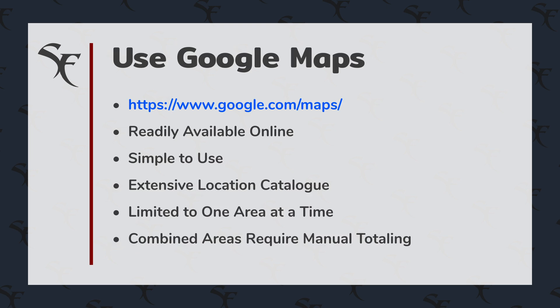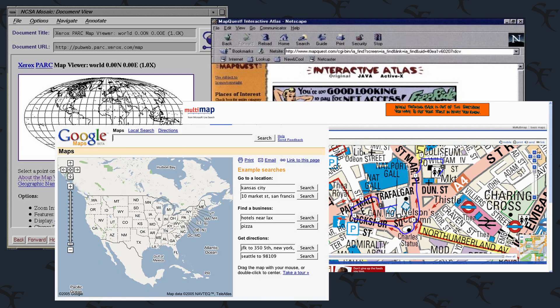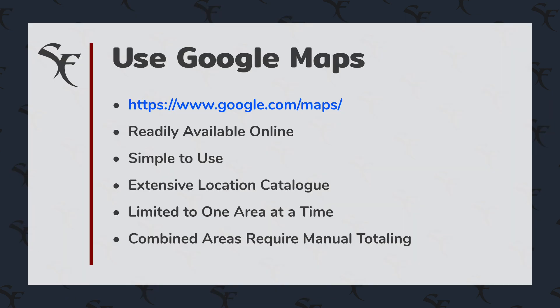Using Google Maps to determine square footage and area. Google Maps is a standout — it's readily available online. It was one of the first mapping programs widely available that people really enjoyed using, and it started off having more features than some of its competitors when it debuted.